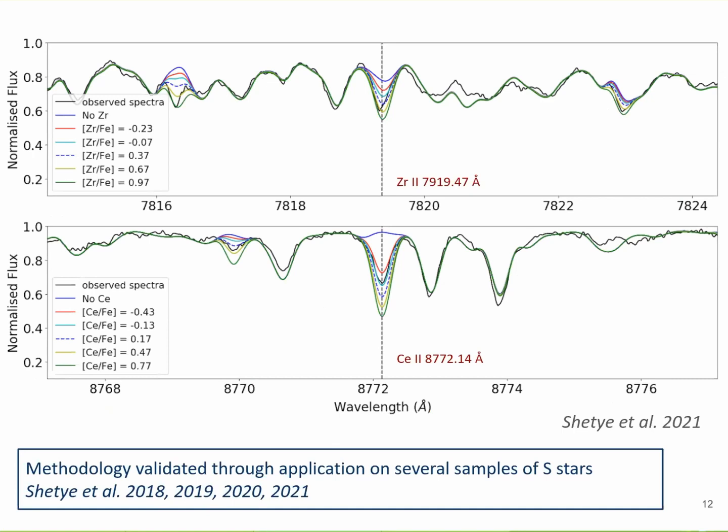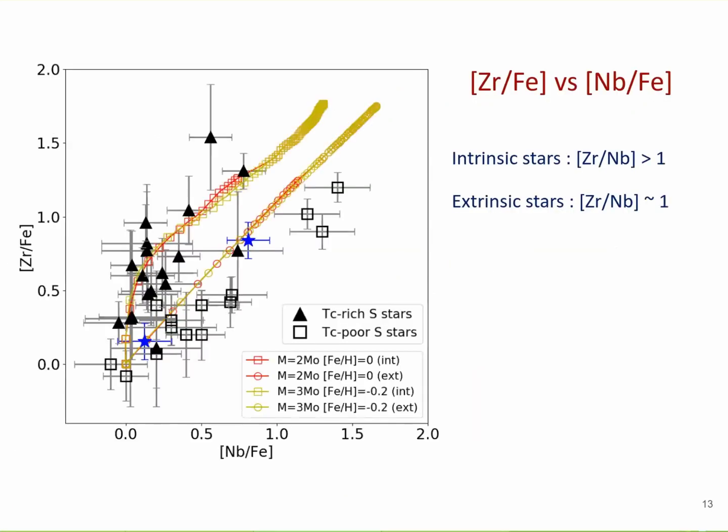We have developed this method and applied it to several samples of S-type stars, which you can also find in the different papers listed here. Now we can get to the abundances, because we have an accurate set of parameters which help us derive accurate abundances.